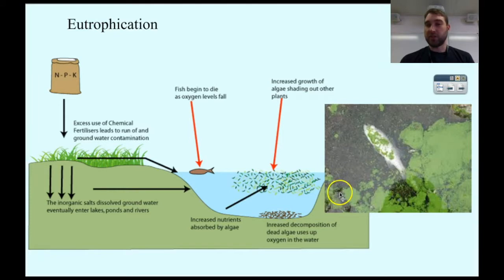That increased nutrient load means you get more algae growing, so here you can see the algae growing. That algal growth shades other plants underneath, and they then die off.